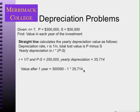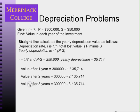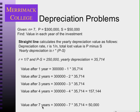The value after the first year is $300,000 minus one times $35,714. After the second year, it's $300,000 minus two times that amount, and so on for each year, until in the seventh year we arrive at $50,000 — exactly the salvage value. We simply allocate the total loss over the seven-year period in equal increments.